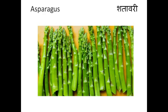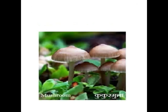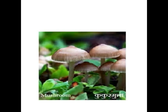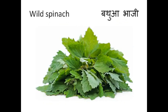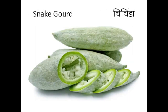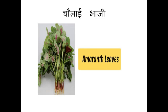Asparagus means shatavari. Mushroom means kukur mutta. Spine gourd. Wild spinach — wild spinach means bathua bhaji. Snake gourd means chichinda. Cholai ki bhaji means amaranthus leaves.